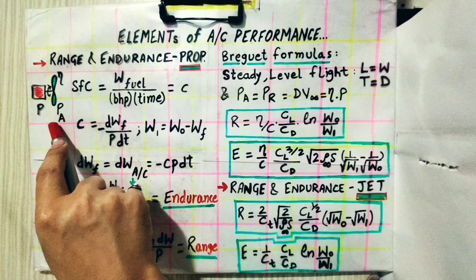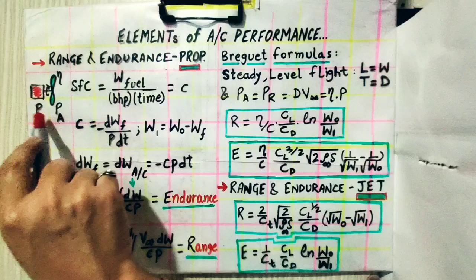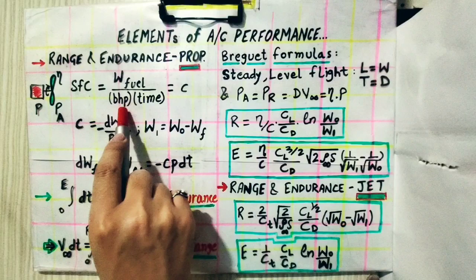The power available at the propeller end is equal to η (eta) times P. So in range and endurance, the power produced by the reciprocating engine is the brake horsepower P, and the amount of fuel consumed per unit time to produce unit brake horsepower is the specific fuel consumption.